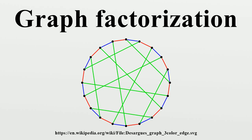In graph theory, a factor of a graph G is a spanning subgraph, i.e., a subgraph that has the same vertex set as G. A k-factor of a graph is a spanning k-regular subgraph, and a k-factorization partitions the edges of the graph into disjoint k-factors.